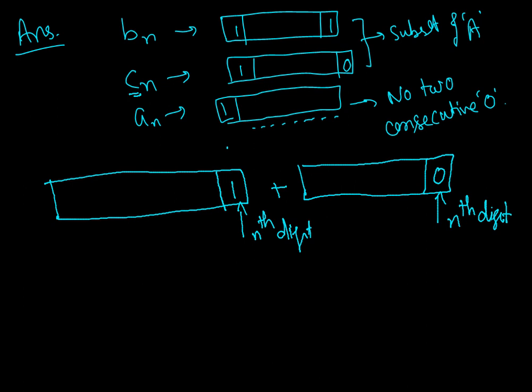Now if the last digit is 0, its previous digit has to be 1. Otherwise, if I am putting 0 over here, then you will have two consecutive zeros. That means if this is 0, this is 1.